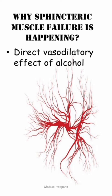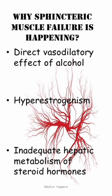The first proposed hypothesis is the direct vasodilatory effect of alcohol in cases of alcoholic liver disease. Then hyperestrogenism and inadequate hepatic metabolism of steroid hormones — these are all the proposed hypotheses causing the sphincteric muscle failure.